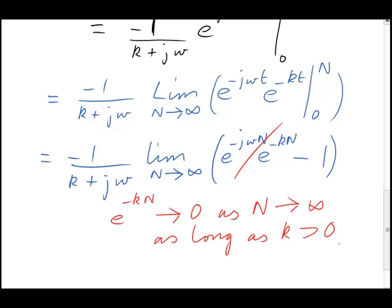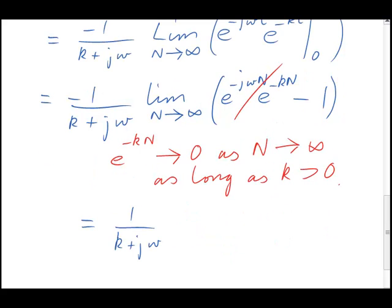Once we accept that that term disappears, then we've just about completed the Fourier transform. We have a negative 1 that's still left, that's not affected by the limit as n goes to infinity. There's also a negative at the front, so we'll get just 1 over k plus j omega. That's a perfectly respectable answer, but it's not in the best form.